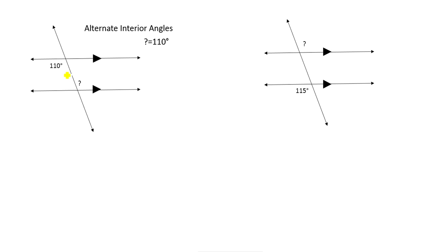Next, we have 2 angles that are on the opposite sides of the transversal and are on the outside of the parallel lines, so these are alternate exterior angles. Recall that alternate exterior angles are equal. So if this angle is 115 degrees, then the question mark will also be 115 degrees.